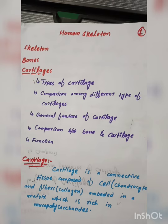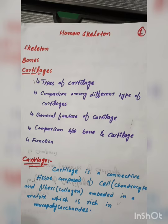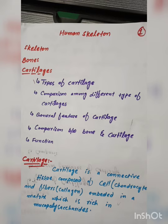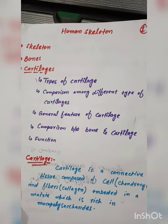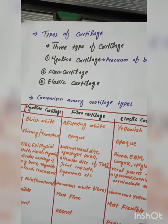Cartilage is a connective tissue. The cells of cartilage are called chondrocytes and the fibers are called collagen fibers, embedded in a matrix which is rich in mucopolysaccharides. There are three types of cartilage.